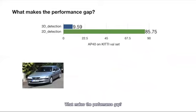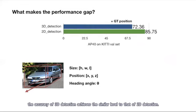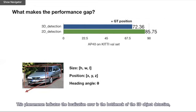What makes this performance gap? To answer this question, we use ground truth to progressively replace each item of the 3D bounding box, including the size, position, and heading angle. We observe that when the position of the bounding box is replaced, the accuracy of 3D detection achieves a similar level to the center of 2D detection. This phenomenon indicates that localization error is a bottleneck of the 3D detection.